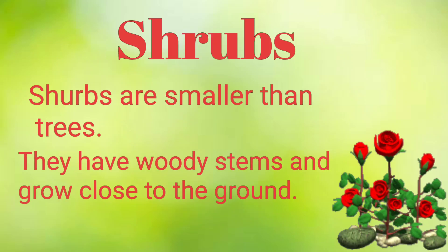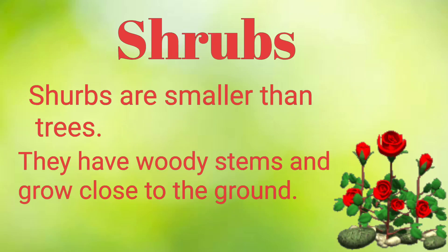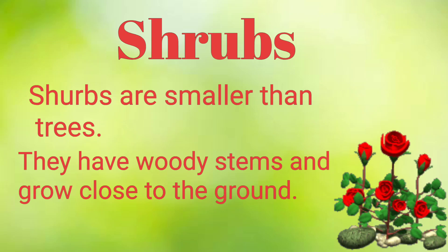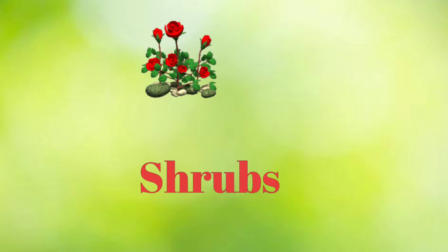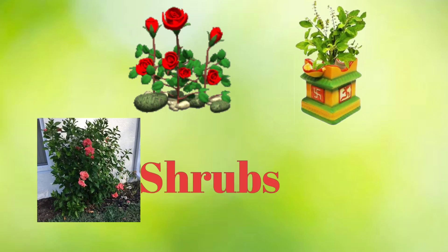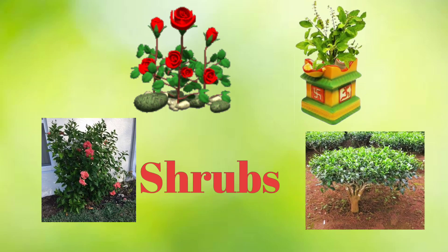Shrubs. Shrubs are smaller than trees. They have woody stems and grow close to the ground. Examples: rose plant, tulsi plant, hibiscus plant, tea plant.